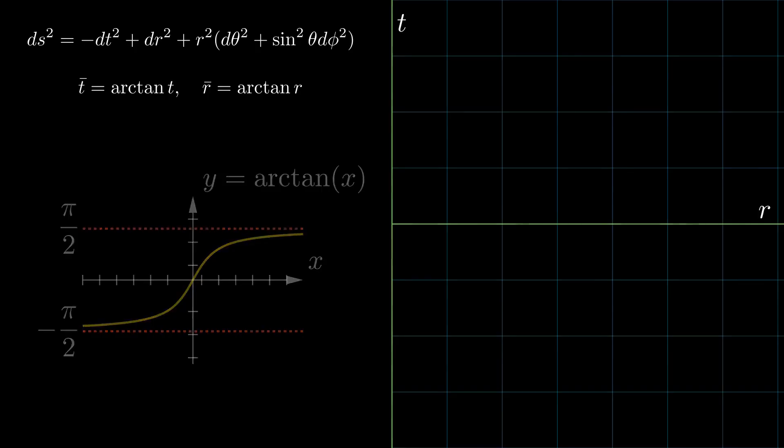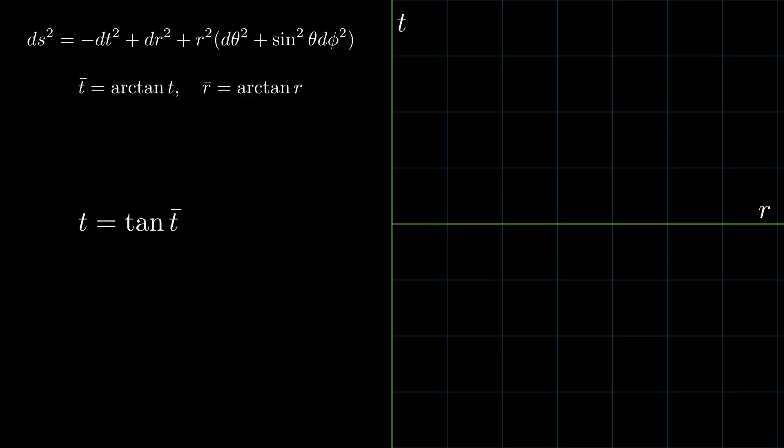To see what our metric is in our new coordinates, we will invert the original expression and write t in terms of t bar. Then we take the derivative and square it to get dt squared. We also do this with the radial coordinate, and then we can write our new metric. Here we have wrote the angular part of the metric as d omega squared.